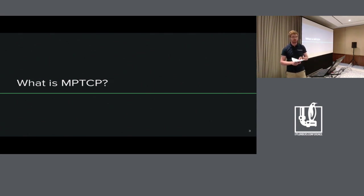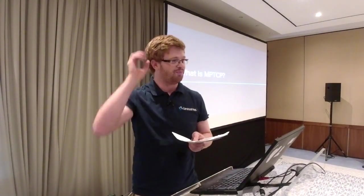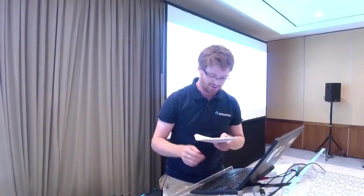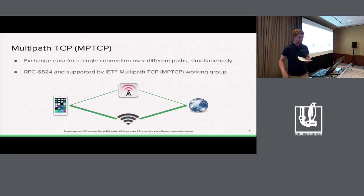So what is multipath TCP? Just to know how fast I can go — may I ask you to raise your hand if you don't know anything about multipath TCP? Nobody raised their hand, so we have a mixed audience. Multipath TCP, in one sentence: it allows exchanging data for a single connection over different paths simultaneously. It breaks the assumption that one connection is restricted to the same five-tuple.